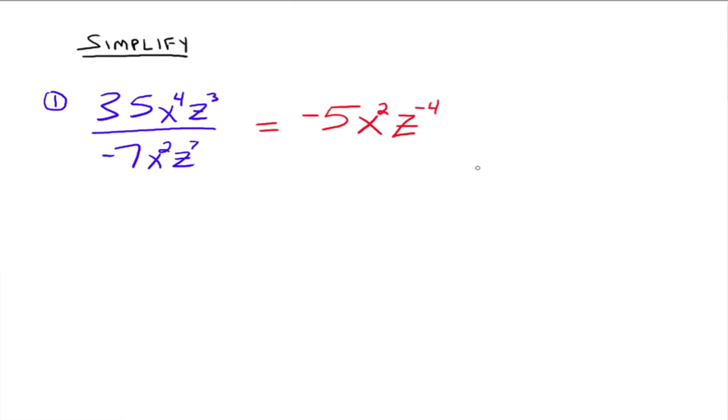And it's always good to write the exponents so that they are positive. That's just a better habit to get into unless directed otherwise. So I'm going to rewrite this as negative 5x squared, and we're going to bring this z to the 4th down below, and that is what this simplifies down to.